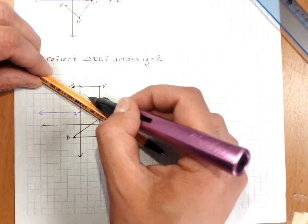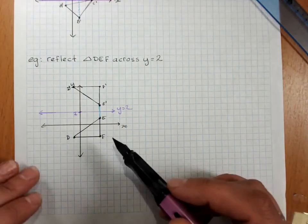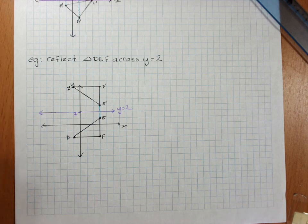So that's reflection. And if you treat every vertex, every corner of the shape, separately, take it to the mirror and take it out the other side, then you should do pretty well.